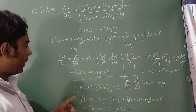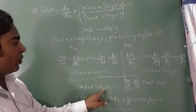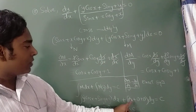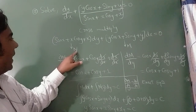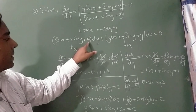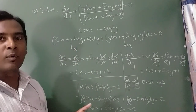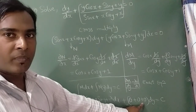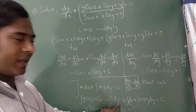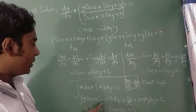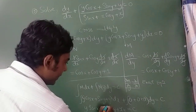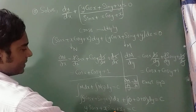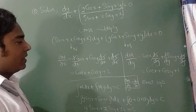The solution requires integration of M dx + integration of N (y-only terms) dy = C. M = y cos x + sin y + y; all terms contain x (treating y as constant multiplier), so N part is zero. Integrating with respect to x: y cos x → y sin x, sin y·x (constant), y·x. Final answer: y sin x + x sin y + xy = C.